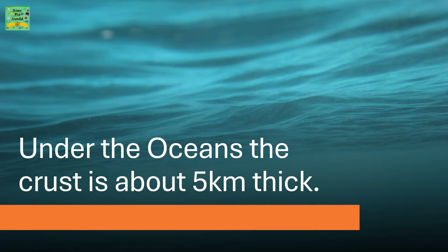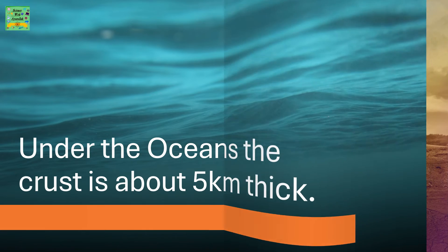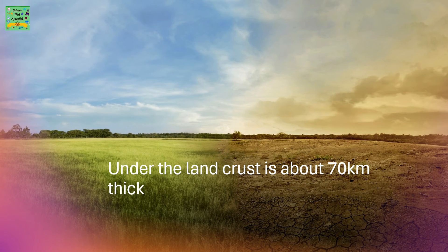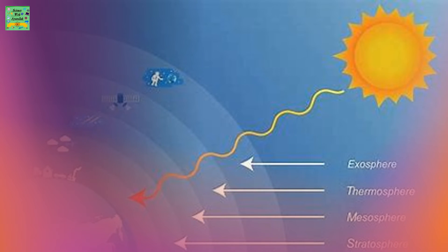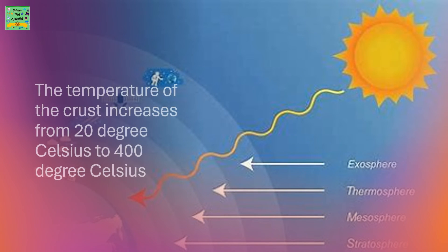Under the oceans, the crust is about 5 km thick. Under the land, the crust is about 70 km thick. The temperature of the crust increases from 20 degrees Celsius to 400 degrees Celsius.